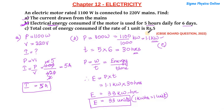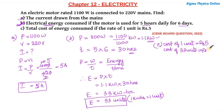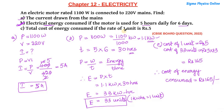Now the third part: total cost of energy consumed if the rate of 1 unit is rupees 5. Cost of 1 unit is rupees 5, so cost of 33 units is rupees 5 multiplied by 33, which equals rupees 165. This is a simple question; I hope you have understood the solution.